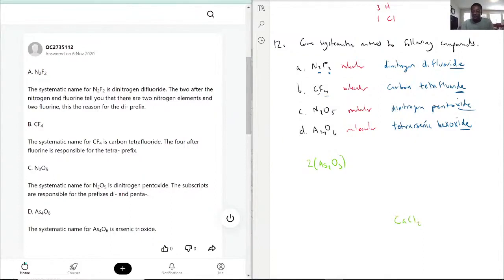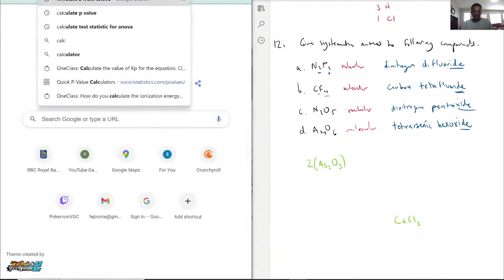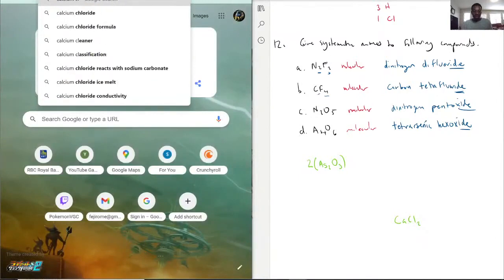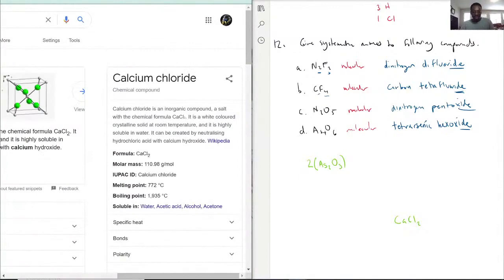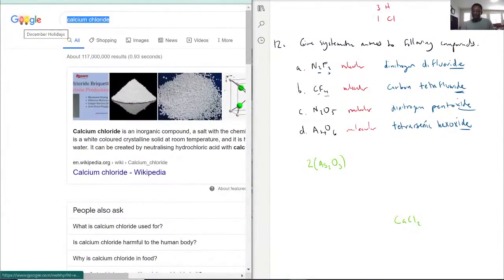Like when you have, a good example would be CaCl2. This is just called calcium chloride. Yeah. This is just called calcium chloride. In fact, if I search it up and just be calcium chloride, and you'll see it here, CaCl2.